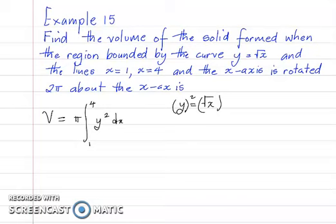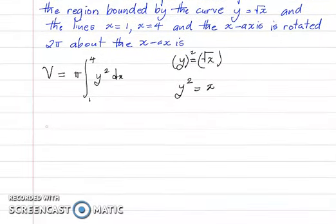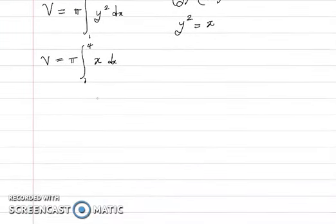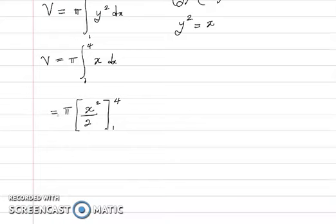We need y² for the calculation, so squaring both sides gives y² = x. Therefore, the volume V = π times the integral from 1 to 4 of x dx. Integrating x gives x²/2, with limits 1 and 4, and π is outside.